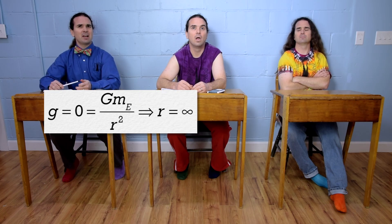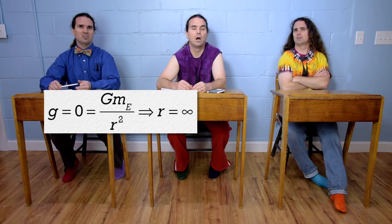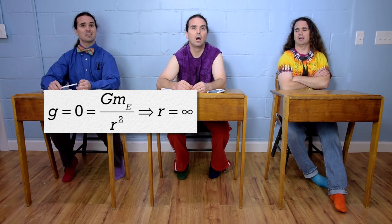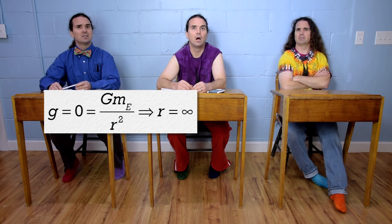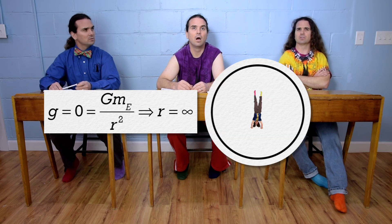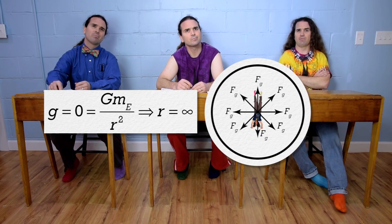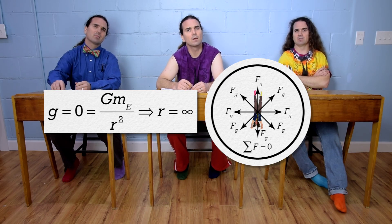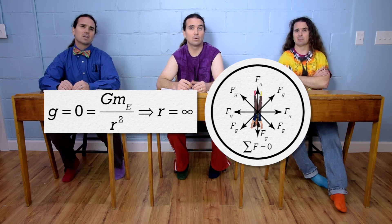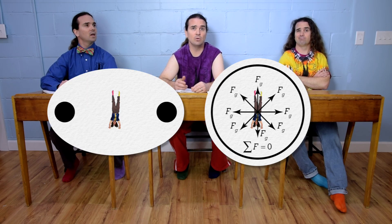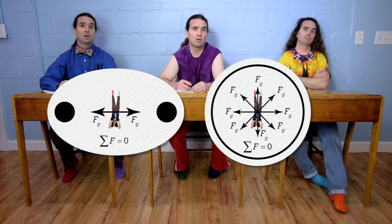So the only way for an object to have zero weight is for the object to be the only thing in the universe? Actually, if you are in the center of a uniform spherical shell, you would be pulled equally toward all parts of the shell. The net force on you would be zero and you would have zero weight. Or you could find a point between two objects where you are pulled equally toward both objects and your weight would be zero.